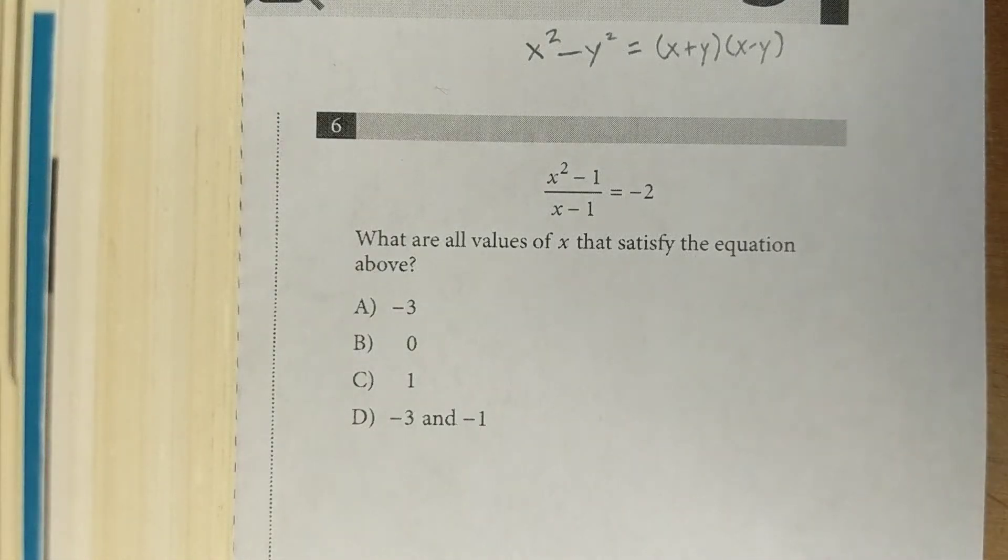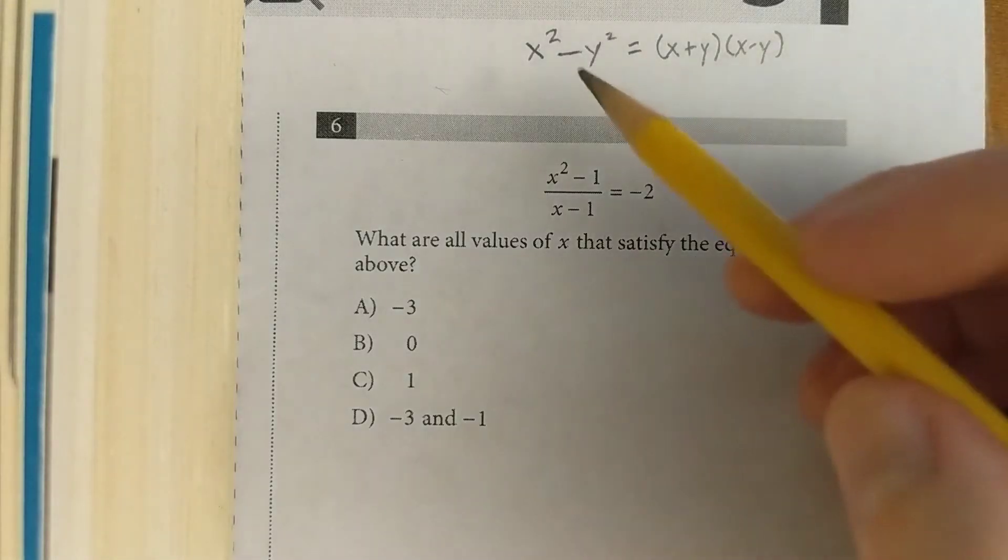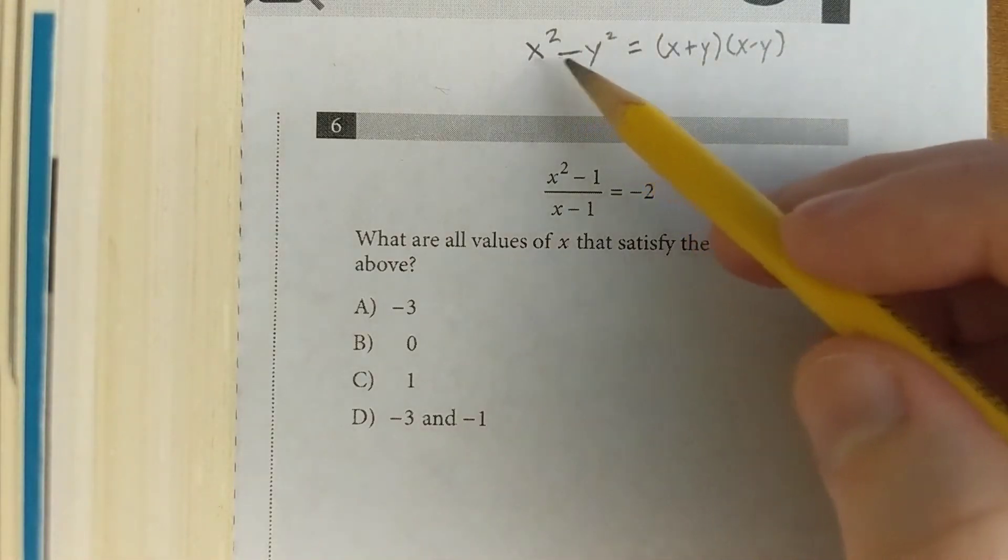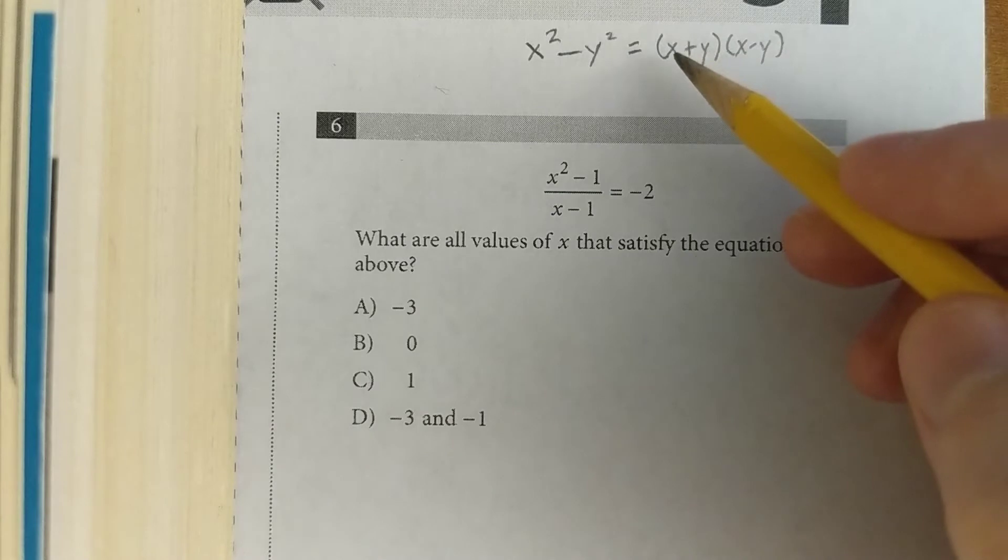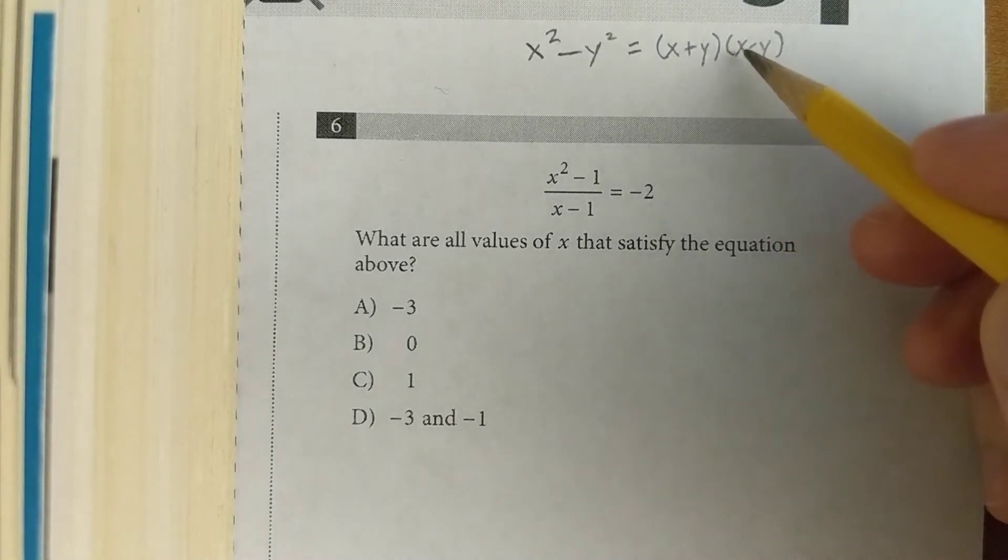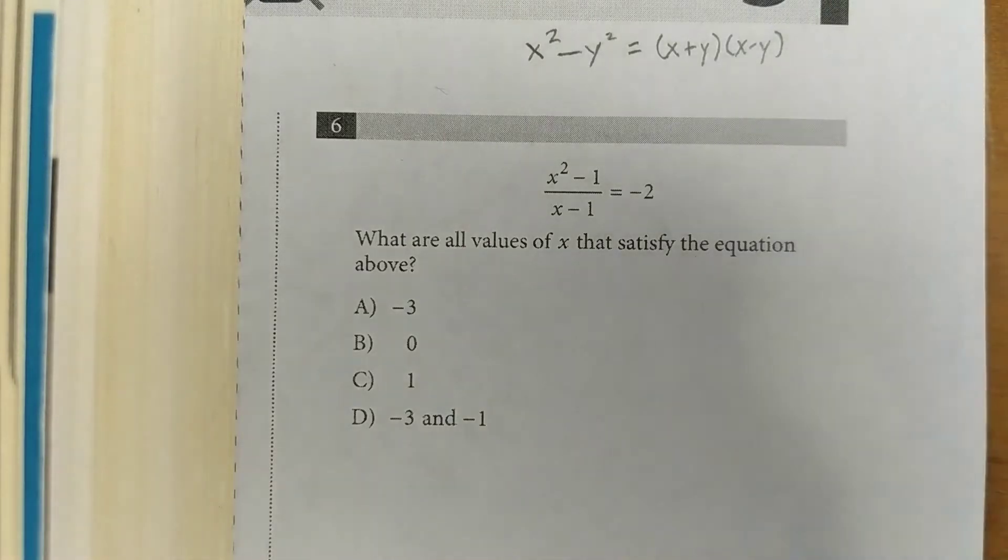The difference of two squares is a super common factoring pattern that shows up all over the SAT. The basic idea is that when you have one perfect square minus another, you can rewrite it as the square root of the first thing plus the square root of the second thing, times the square root of the first thing minus the square root of the second thing.